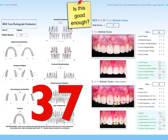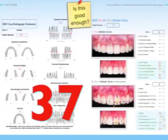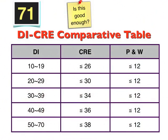Is this result good enough to present? Let me go back to this table. In our association, we came up with a table called the DICIE comparative table.